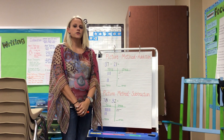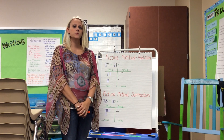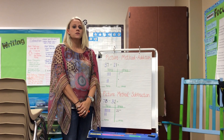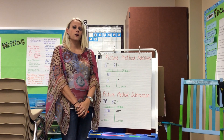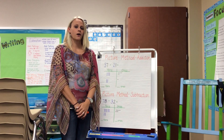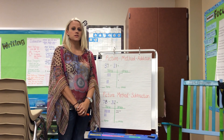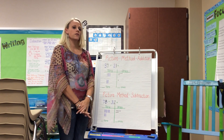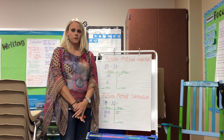The first strategy we're going to be working with is the picture method. The reason we use picture method first is because students learn through a CRA model — concrete, which is the manipulatives, then representational, which is the picture, and then abstract, which is the bare number.